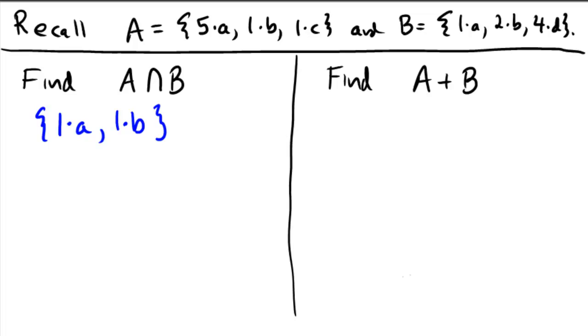And finally, for the set sum, when we sum these two together, here's the place we're going to add up the total number and see how much we have in total. Five copies of A from A, one copy of A from B for a total of six copies of A. One B in A, two Bs in B, total three copies of B. Then we do have the one copy of C from the top, and we do have the four copies of D from the bottom or from set B.